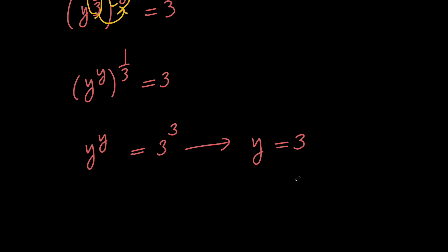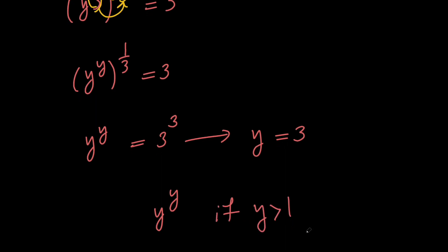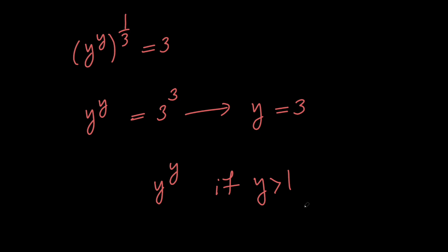And actually, this is the only solution to our equation because y to the power y is a 1 to 1 function if y is greater than 1. And this means that any horizontal line such as this number will intersect our function only at one point, and that point is 3.